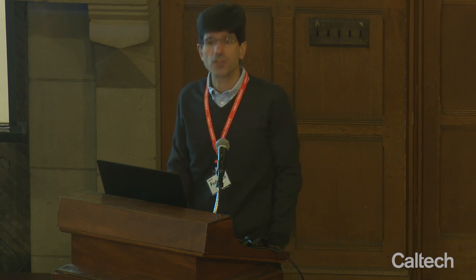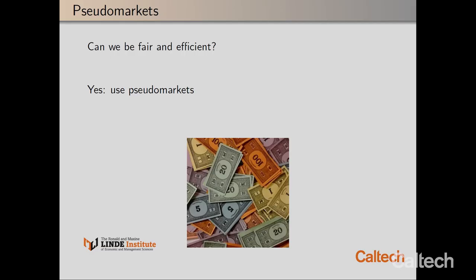So can we be fair and efficient? In the type of problems I will talk about today — exemplified by assigning offices — the answer is yes. And you can do it in a way that exploits ideas from the study of markets. We call them pseudo markets. The word 'pseudo' is there because we use fake money — that's why there's a picture of Monopoly money.